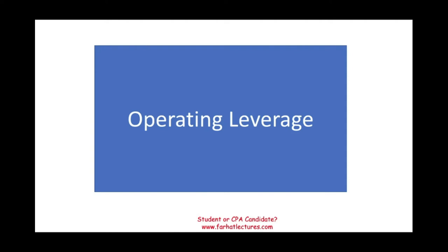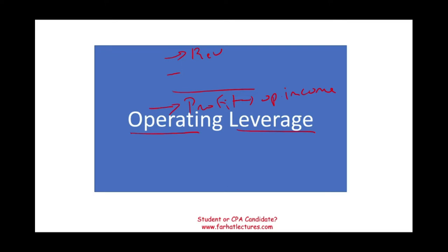Hello and welcome to this session on operating leverage. Operating leverage is a measure of how revenue growth translates into operating income. Simply put, if we look at the income statement, we have revenue at the top minus all expenses — cost of goods sold and so on — and at the bottom we have profit, or operating income. The question is: how does a change in revenue affect the change in operating income? This is what operating leverage is measuring.